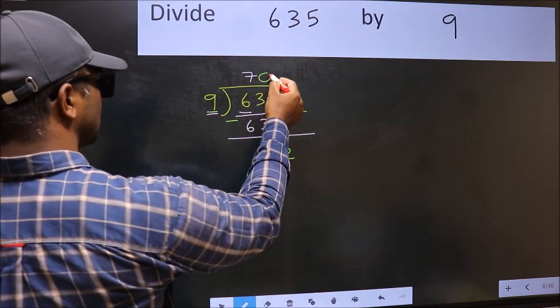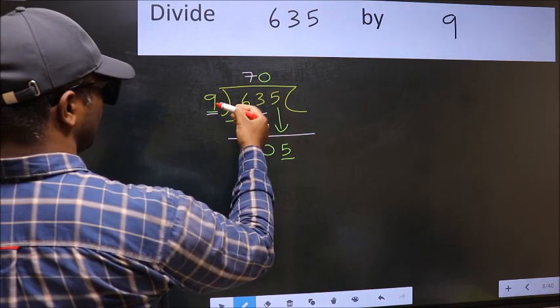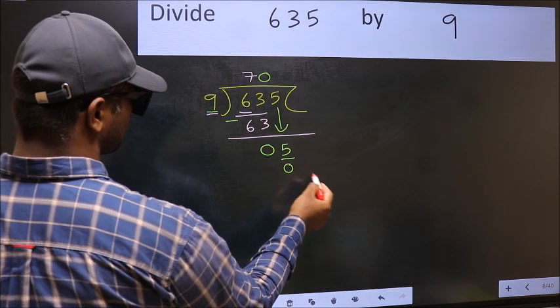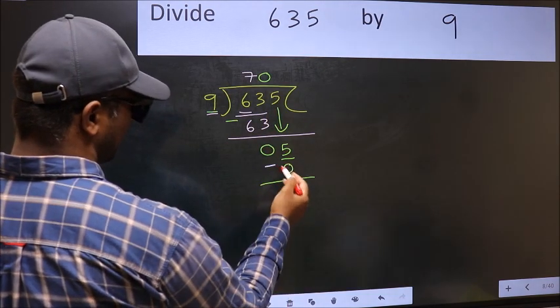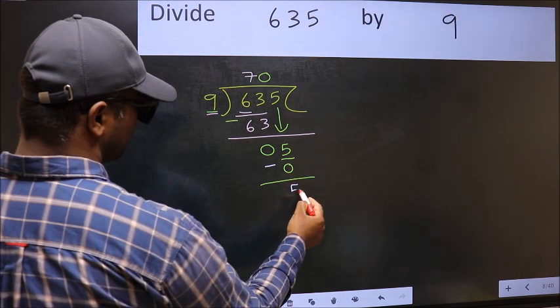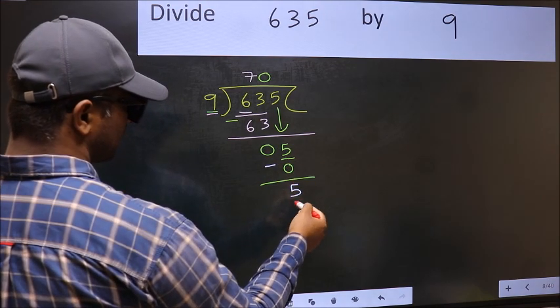So 9 times 0 equals 0. Now subtract: 5 minus 0 equals 5. Over here, we did not bring any number down, and 5 is smaller than 9.